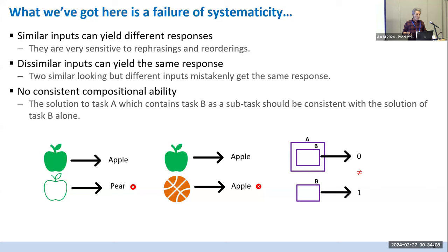One way to characterize what's going on with large language models is that there's a failure of systematicity: similar inputs give you different responses. They're very sensitive to rephrasing and reorderings. There's a paper recently pointing out that premise order for logical reasoning matters — we all know the set of premises is a set and shouldn't matter, but it matters to them. That's an example of similar things being treated differently.